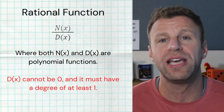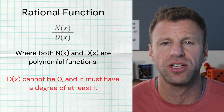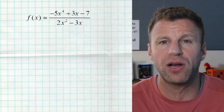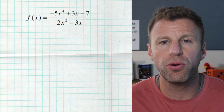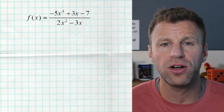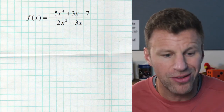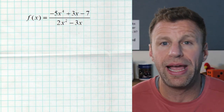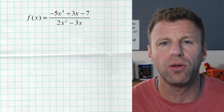Those are the rules — if you meet that, you are a rational function. So here is our first example of what a rational function actually looks like. Pretty simple. We see a polynomial in the numerator that has a degree of four, and a polynomial in the denominator with a degree of two. And well, that's it. Pretty simple.